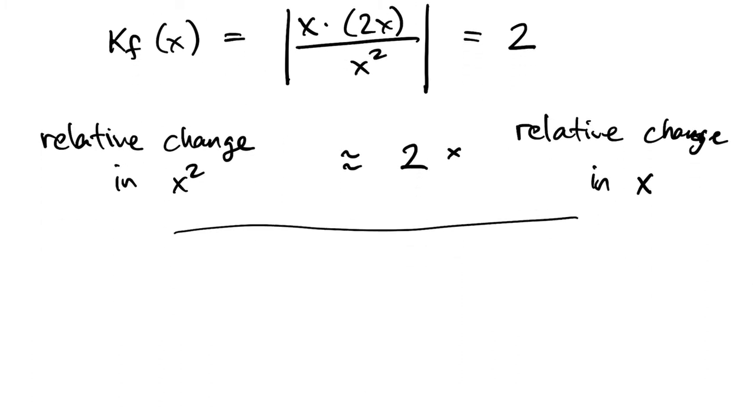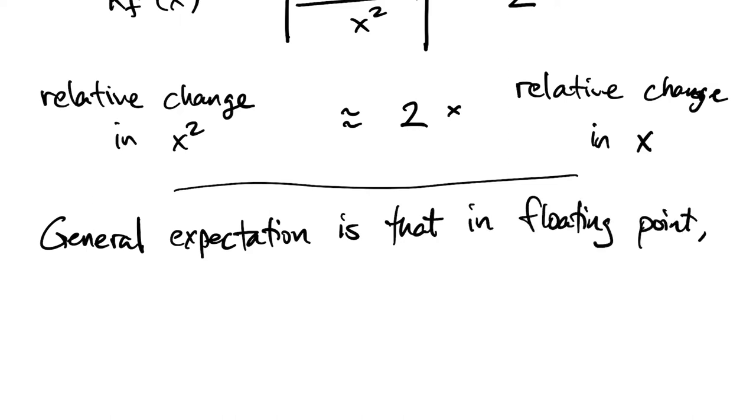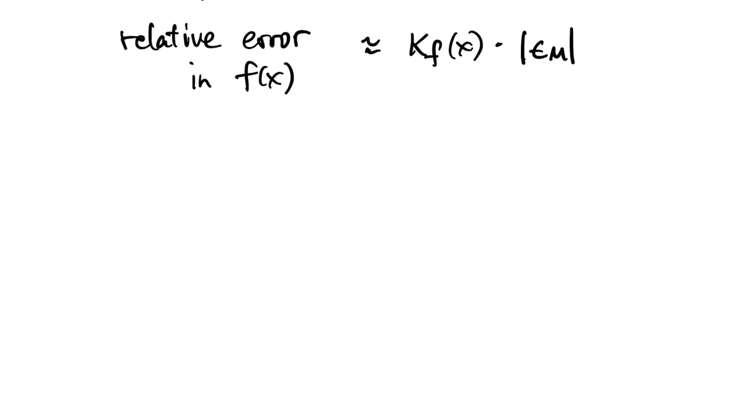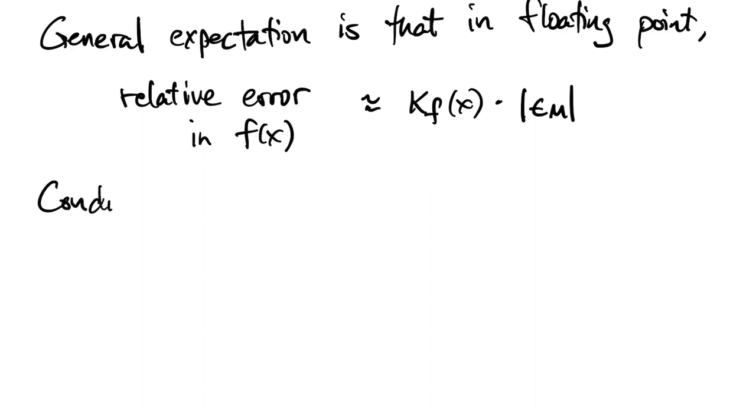So when we're talking about errors due to floating point arithmetic, we expect that those errors get multiplied by a factor of kappa when we pass from the data to the solution. It's worth noting, though, that the analysis applies to any kind of perturbation, not just floating point arithmetic.